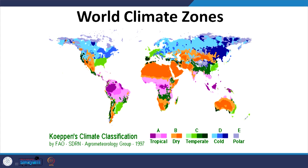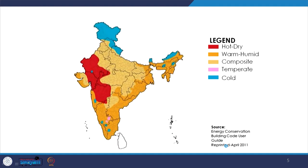World climatic zones are given as per Köppen's climatic classification, which divides them into 5 climatic zones, of which 4 are present within our own country India. These are tropical, dry, temperate, cold, and polar. The polar climate classification is not present in India. For India, as per ECBC, we have a different classification of climatic zones and we largely follow these climatic zones and the design considerations accordingly.